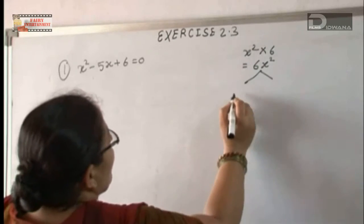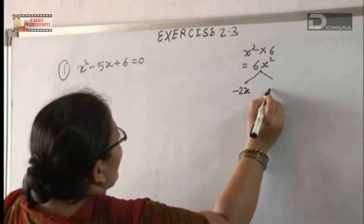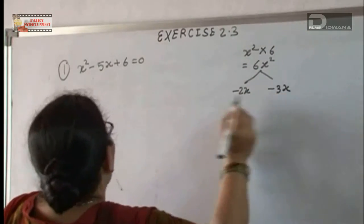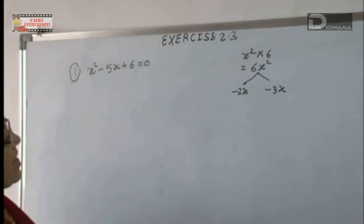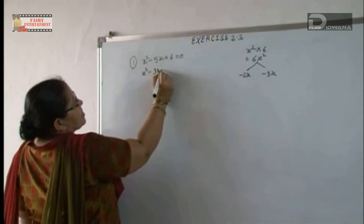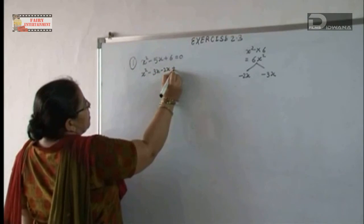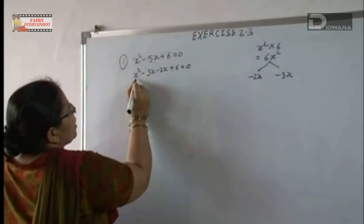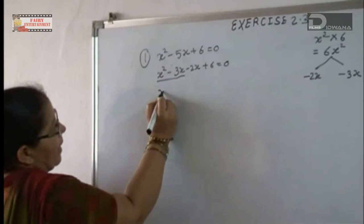We have to make the factor of 6. So, factor is minus 2x and minus 3x and we want the minus 5x. So we will write the question, x square minus 3x minus 2x plus 6 equal to 0.